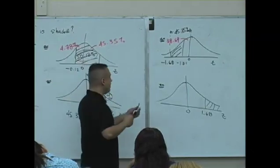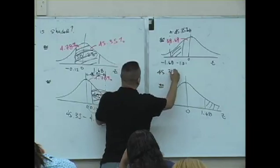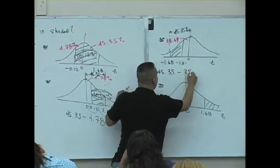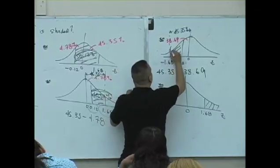So then, how did you get your answer earlier? 45.35 minus 38.69. It's 6 point what?